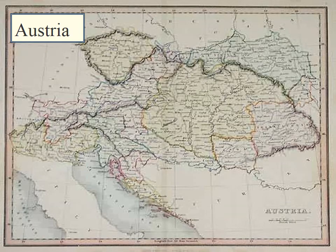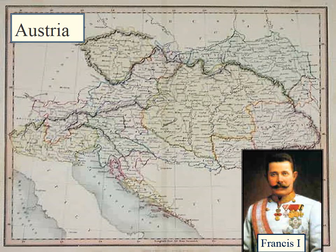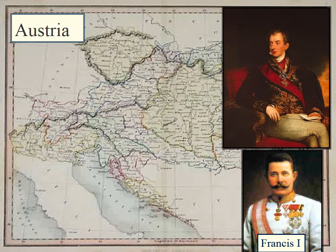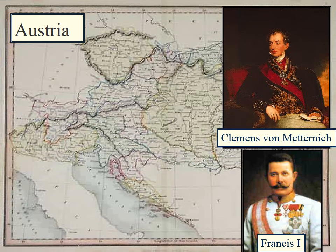The first one we're going to look at is Austria. Austria is one of those Eastern European empires, ruled by the Habsburgs. Francis I is the emperor at this time, and his second in command is Clement von Metternich. Both of these gentlemen are very conservative in their viewpoints — appointed by God, should have last say in everything, absolute control.